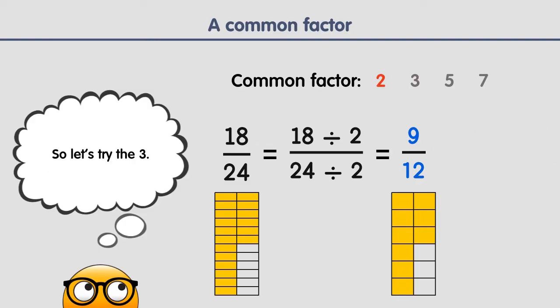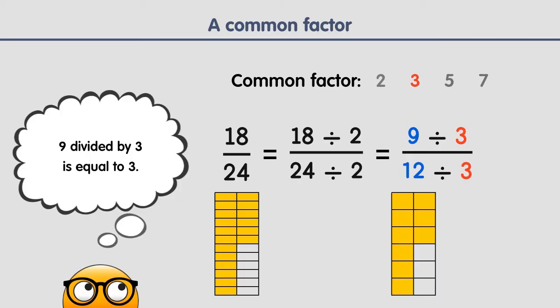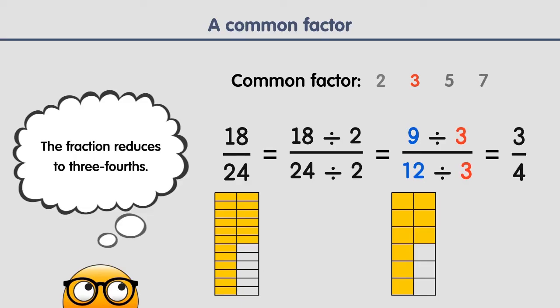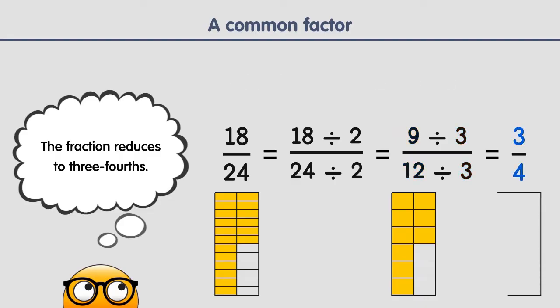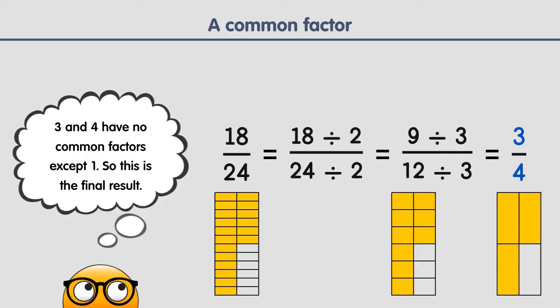So let's try the 3. 9 divided by 3 is equal to 3, and 12 divided by 3 is equal to 4. The fraction reduces to 3 fourths. 3 and 4 have no common factors except 1, so this is the final result.